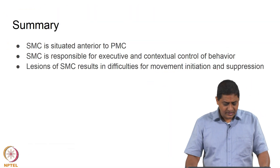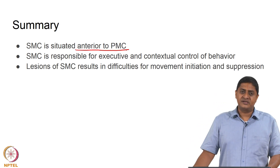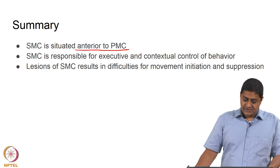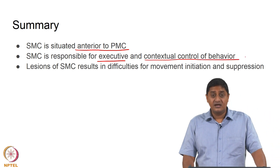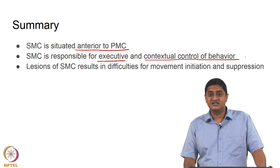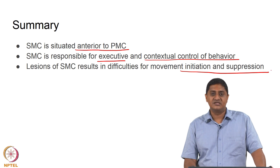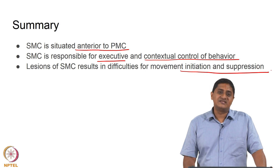In summary, the supplementary motor area is located anterior to the primary motor cortex and is divided into the SMA proper and the pre-SMA. The supplementary motor cortex is responsible for executive and contextual control of behavior. Lesions of the supplementary motor cortex result in difficulty of movement initiation and movement suppression, sometimes leading to very embarrassing or difficult situations. With this we come to the end of this lecture. Thank you very much for your attention.